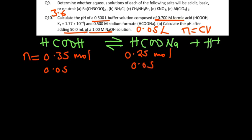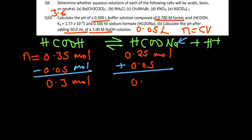Where are we adding and where are we subtracting? It's a base, so we're adding to the other base that's already present, and we're subtracting from the acid due to the neutralization. So 0.35 minus 0.05 gives us 0.3 moles, and 0.25 plus 0.05 also gives us 0.3 moles.